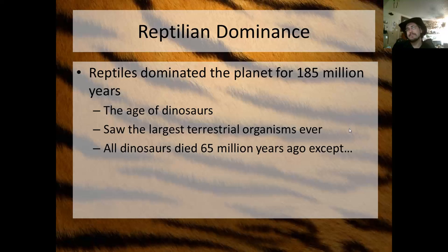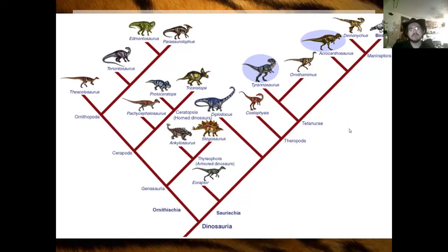Well, except one type of dinosaur — the birds. That's right: birds fall under Dinosauria. This is subclass Dinosauria, and if you look at the Dinosauria lineage, it gave rise to all of the dinosaurs — and along that lineage are the birds, which is pretty sweet.